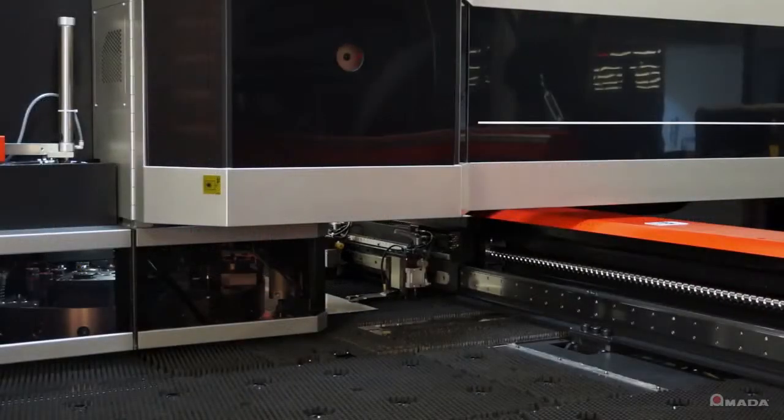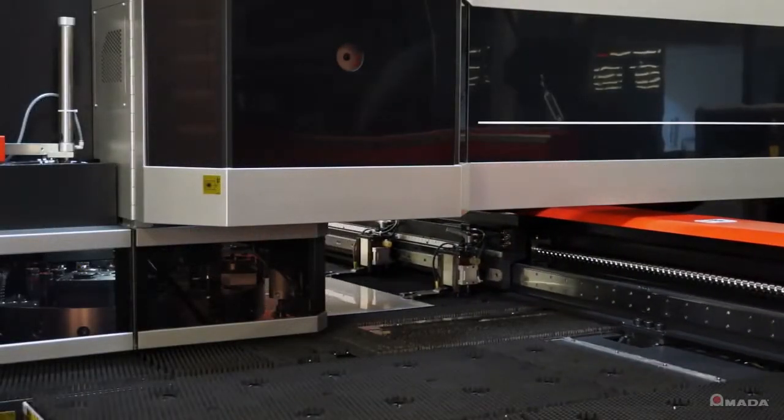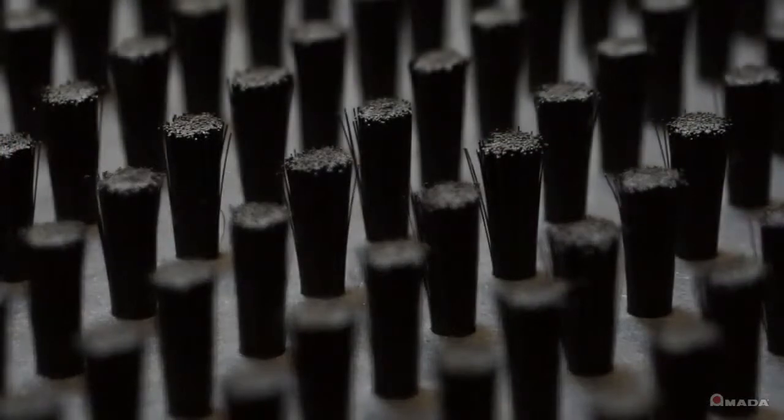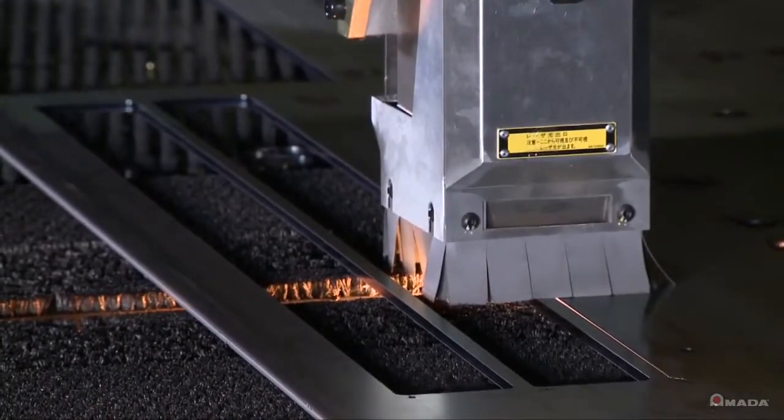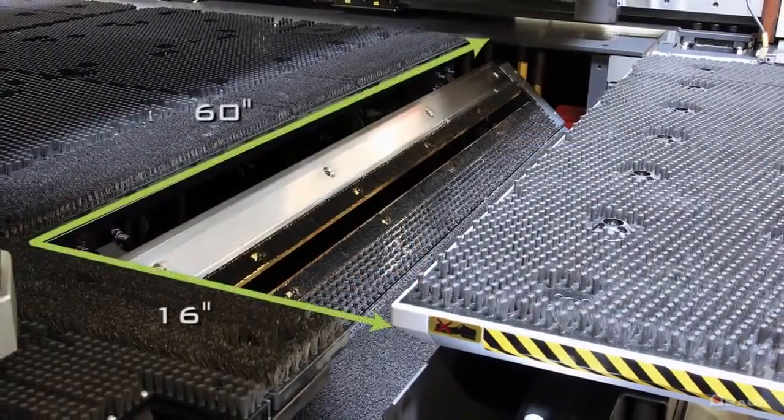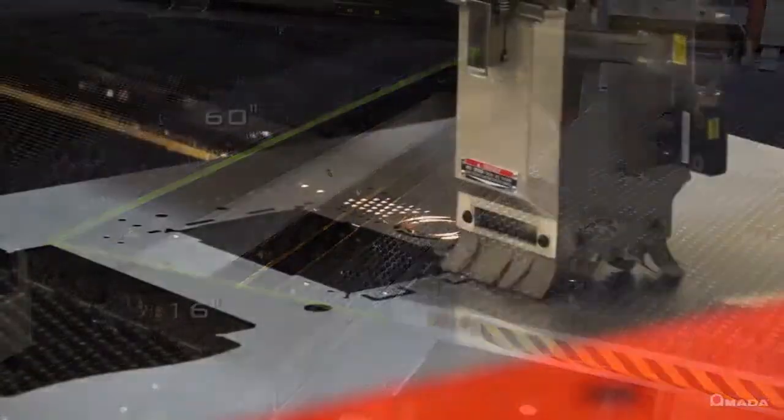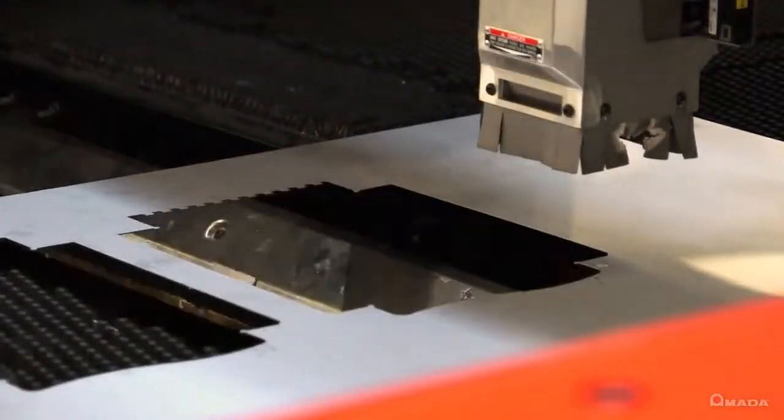There are two table sizes available on the AKIA and they come standard with brushes that help reduce noise levels and eliminate scratching on the material. Each table size supports sheets up to quarter inch thick and incorporates a large trap door which can be used to remove parts and scrap very effectively.